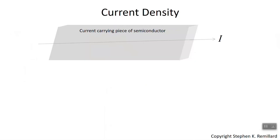We will depict the semiconductor as this block that's carrying current. The current is shown going to the right in the picture, meaning that's the direction that charge carriers are going, or the opposite direction, depending on whether they're electrons or holes. If the charge carriers are electrons, they're going in the opposite direction — to the left. If the carriers are holes, they're going in the same direction as current, so to the right.